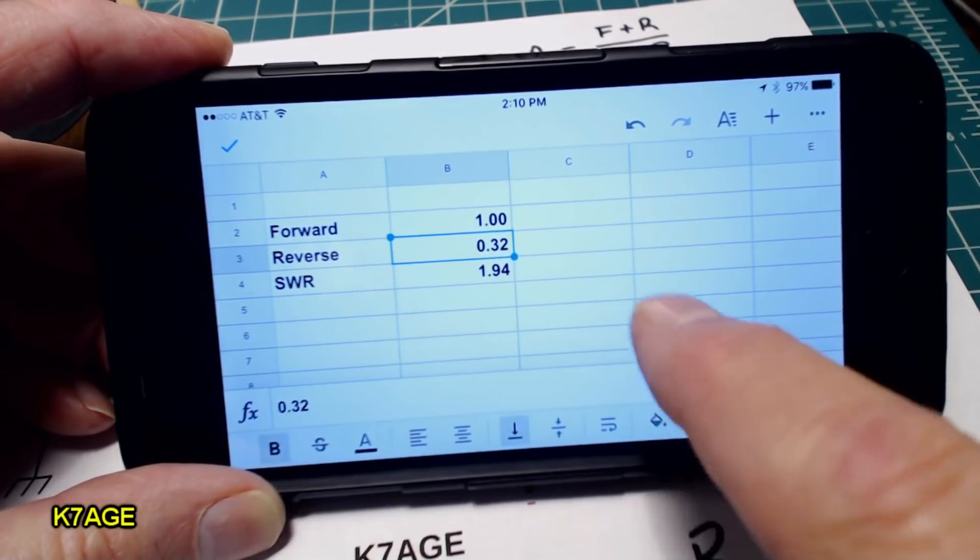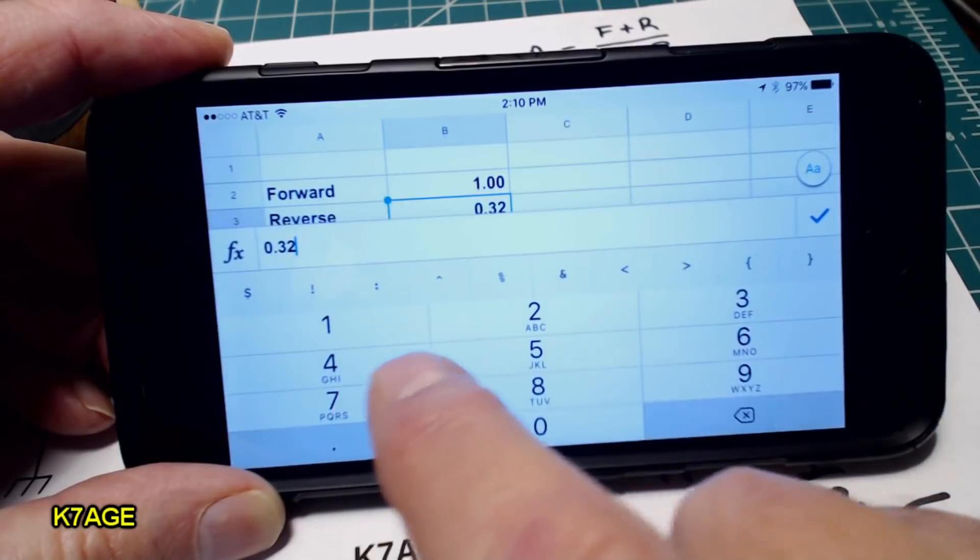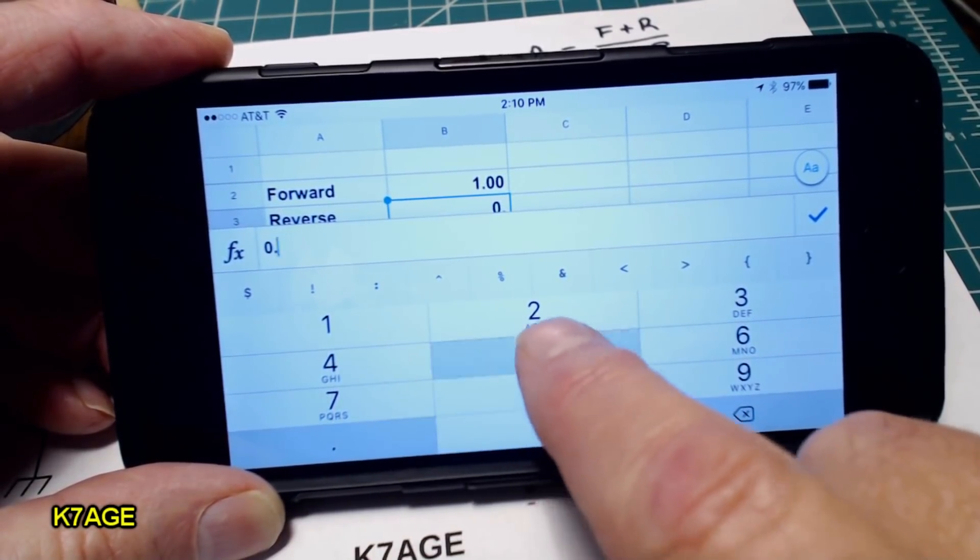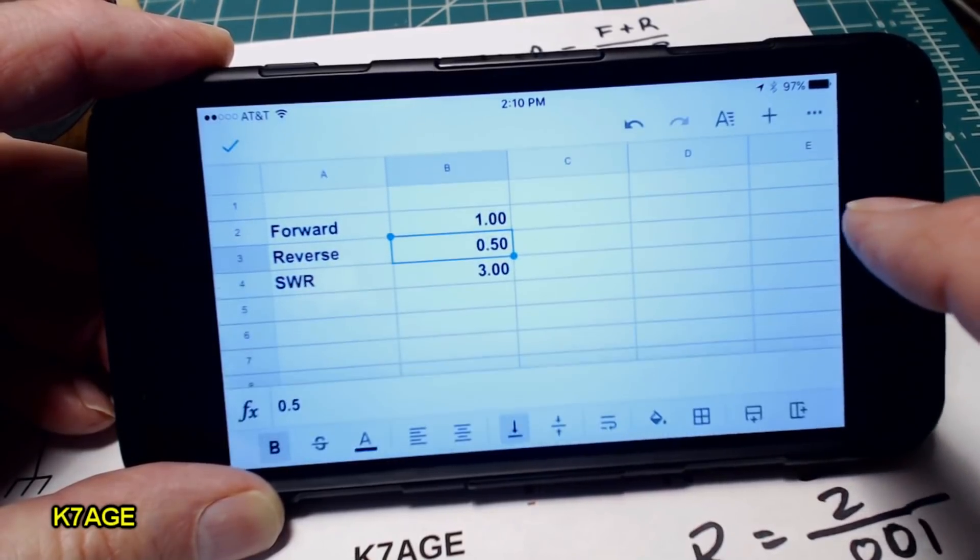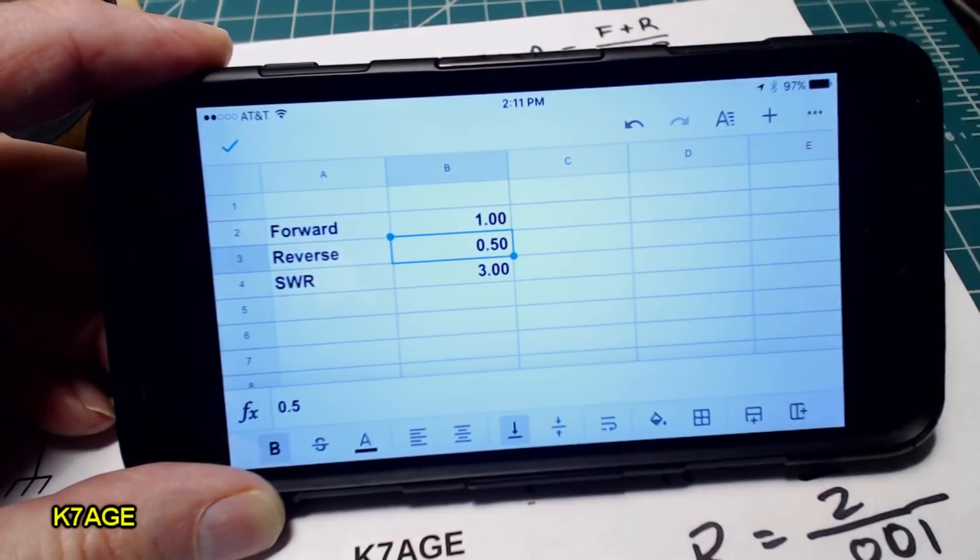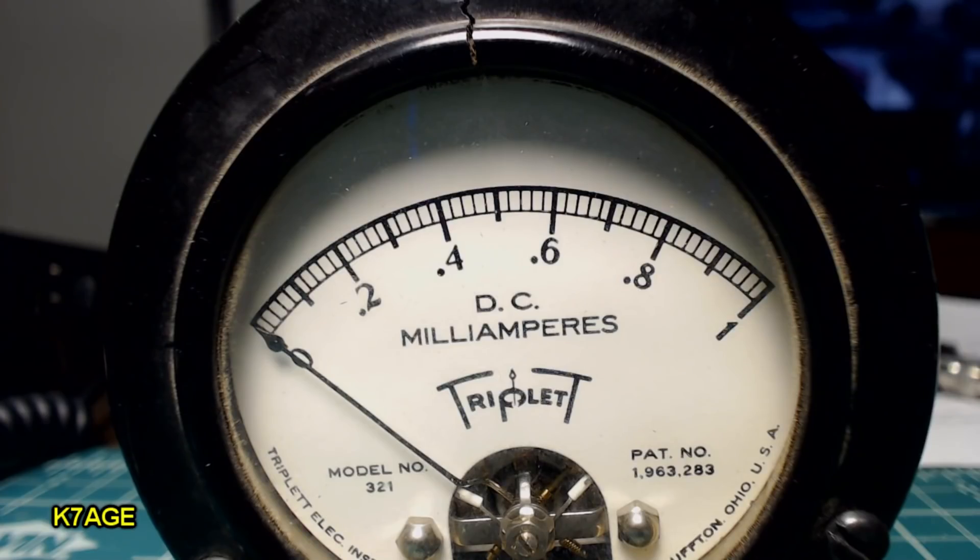So even though I don't have an SWR scale on the meter, I now know that 0.3 is 2 to 1 which is good. And I know I played with this that if I have a meter reading of 0.5, I have an SWR of 3 to 1. So 3 to 1 and under is typically where we want to be. So I know if I'm half scale or down my transmitter should be happy. 0.3 is SWR 2 to 1, 0.5 is an SWR 3 to 1.